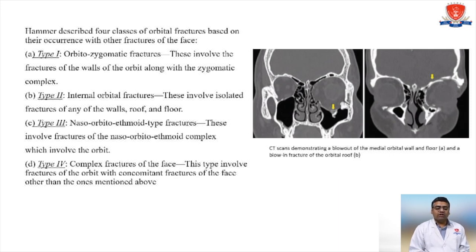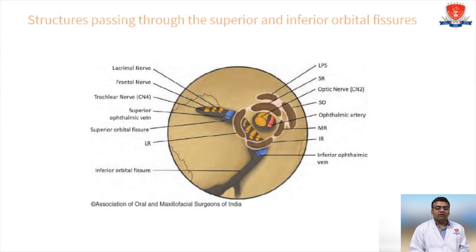Structures passing through the superior and inferior orbital fissures: through the superior orbital fissure pass the lacrimal nerve, frontal nerve, trochlear nerve, superior ophthalmic vein, and branches of the oculomotor nerve. Through the inferior orbital fissure pass related structures. The optic canal transmits the optic nerve and ophthalmic artery.